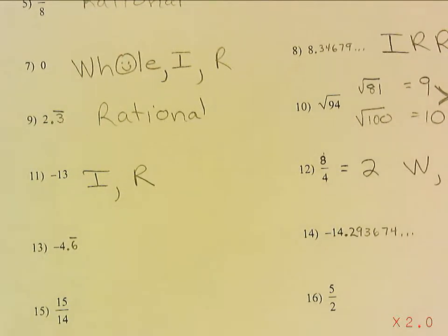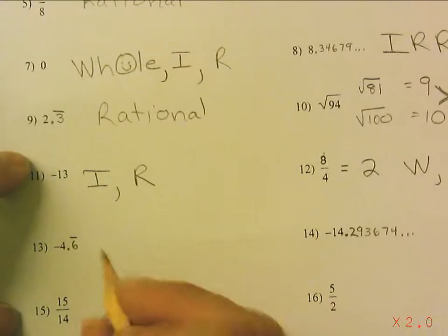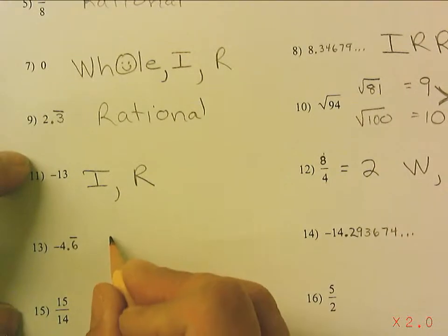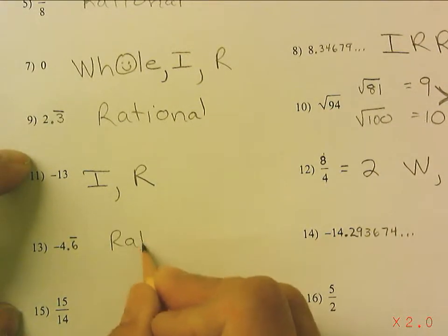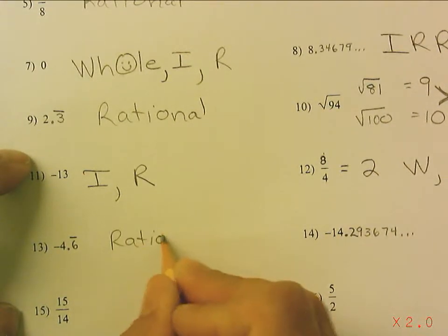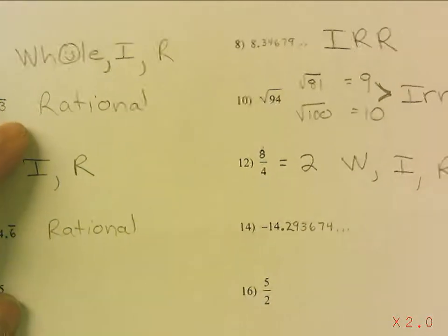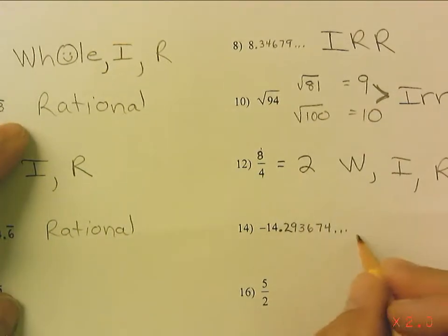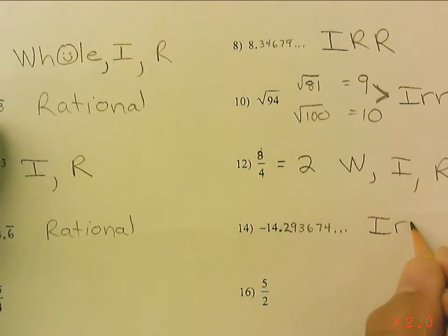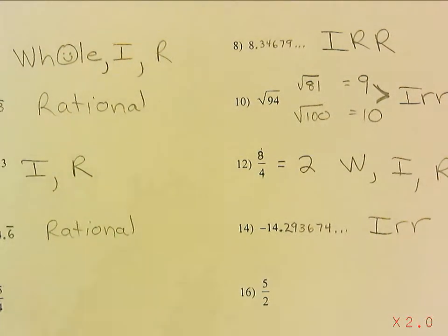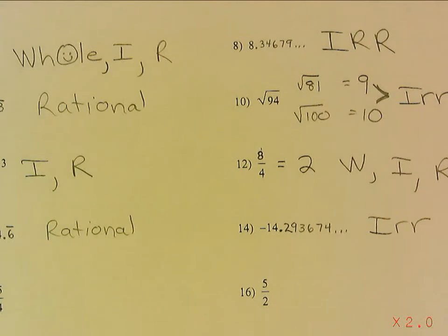Negative 4.6 is repeating, therefore it's rational. Number 14 is non-repeating and non-terminating, therefore it's irrational. And I'm going to let you finish the rest on your own.